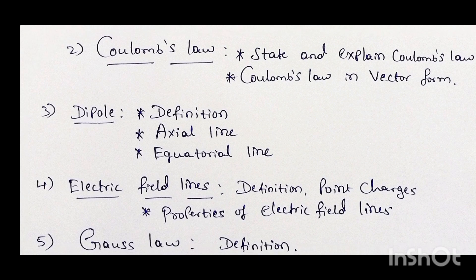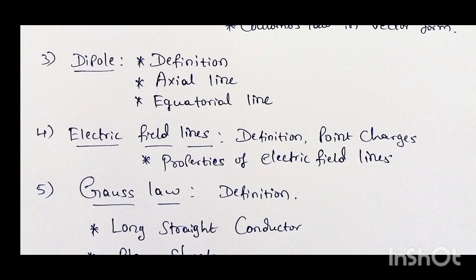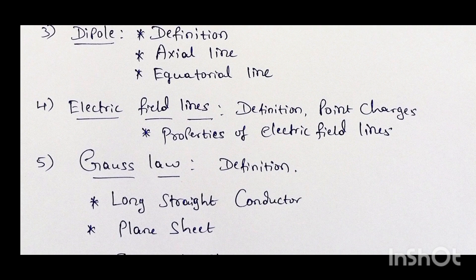The next concept is electric field lines. You are going to get questions like definitions, point charges, electric field lines between two positive charges, and electric field lines between equal and unequal charges — that is, one positive and one negative. Such types of questions appear for two marks, and for three marks: mention the properties of electric field lines, where you have to answer minimum three properties.